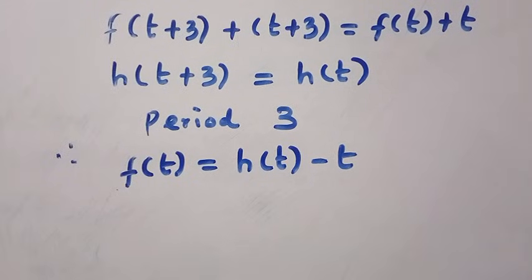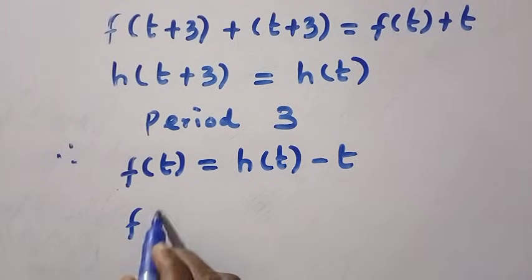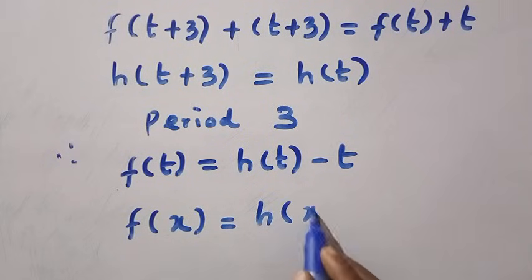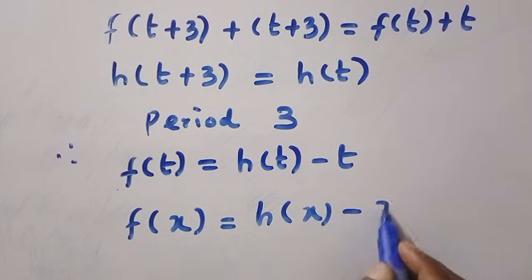And, changing t to x, we have f of x equals h of x minus x. So, this h of x is any periodic function